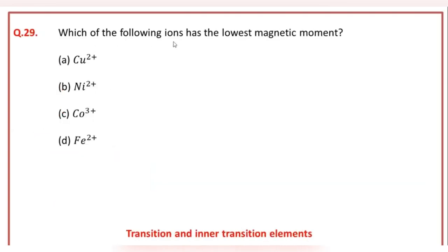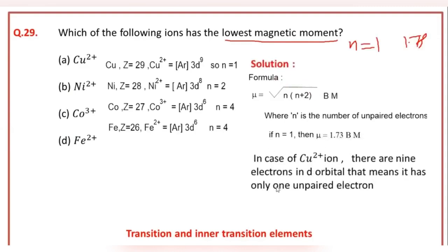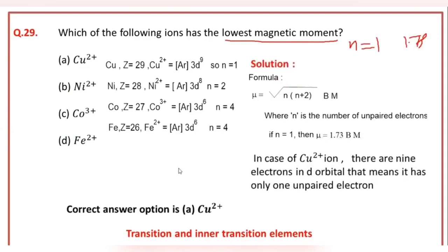Which of the following ions has the lowest magnetic moment? The correct answer option of this question is A, that is Cu²⁺.